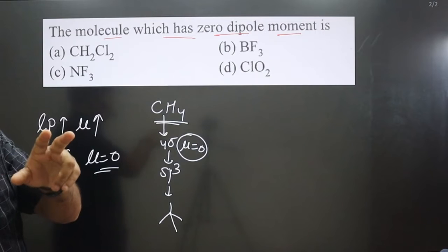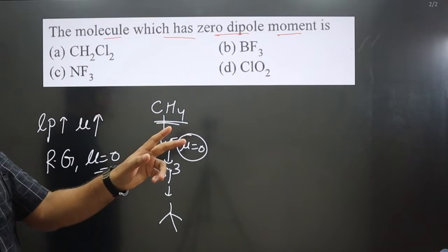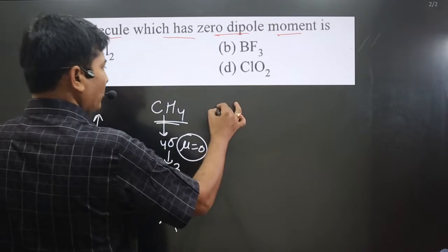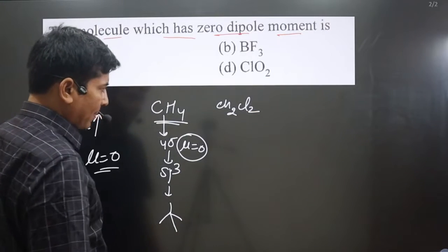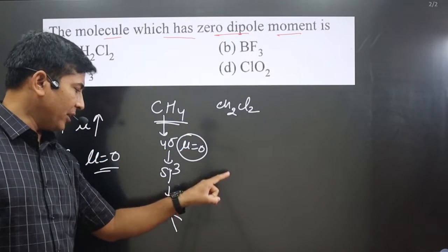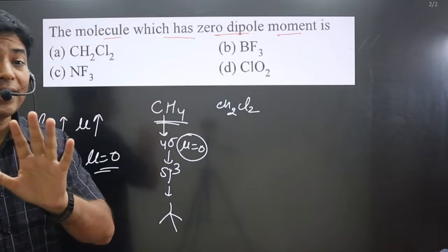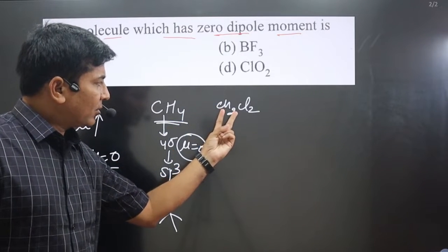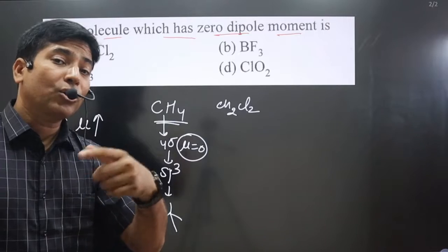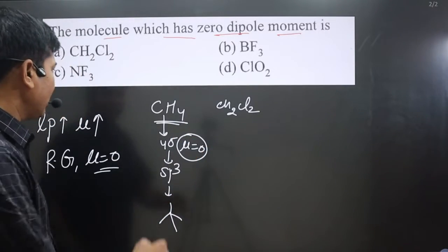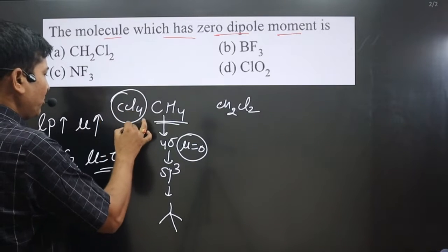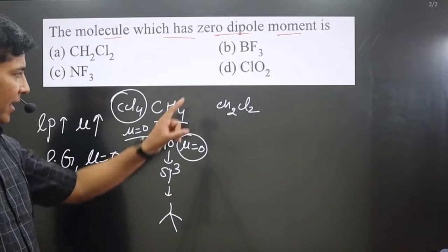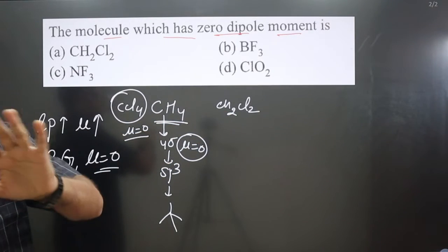Now for CH₂Cl₂, it also has four sigma bonds, sp³ hybridization, and tetrahedral geometry, and carbon carries no lone pairs — so dipole moment is supposed to be zero, but it is not. Why? Because two different types of elements with different electronegativity are attached. Compare this with CCl₄, where all substituent groups have the same electronegativity, so its dipole moment is zero.